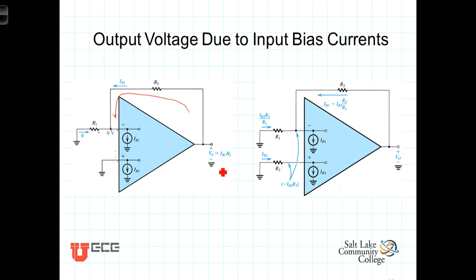Now we can reduce this effect by adding a third resistor, R3, to the non-inverting terminal. This provides a resistance here and as current IB2 is flowing through it, it creates a voltage drop from ground, drops this down. And so the voltage here now is negative IB2 times R3. IB2, the input bias current, times R3.